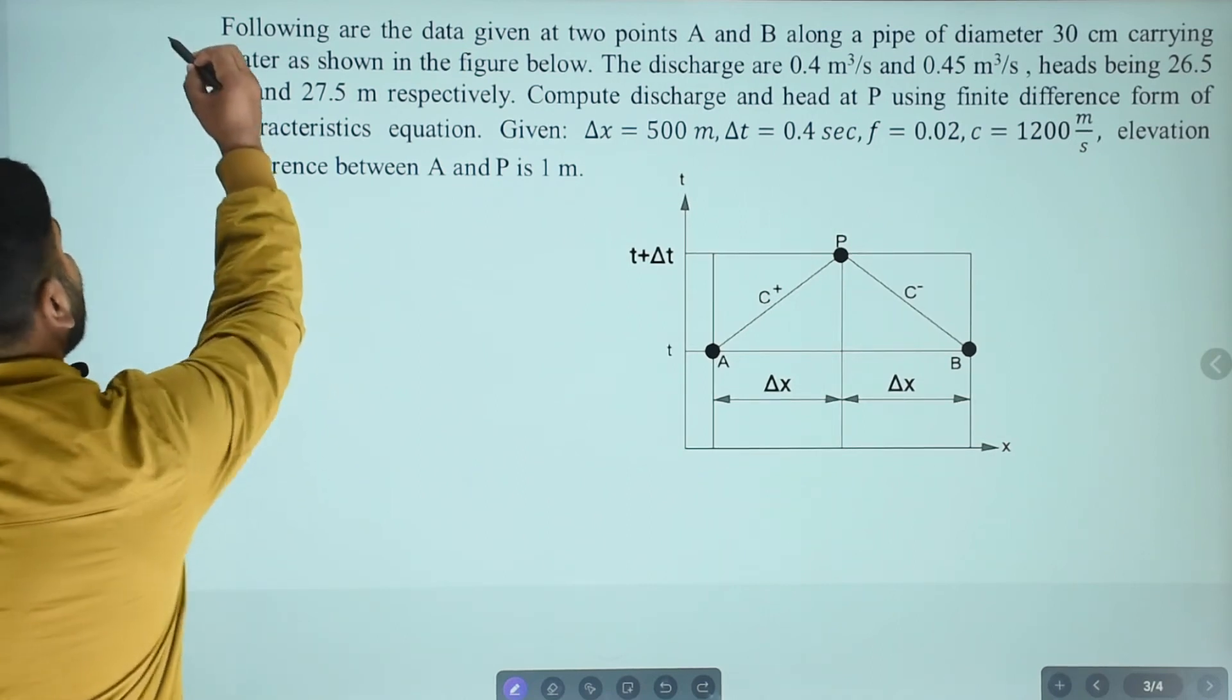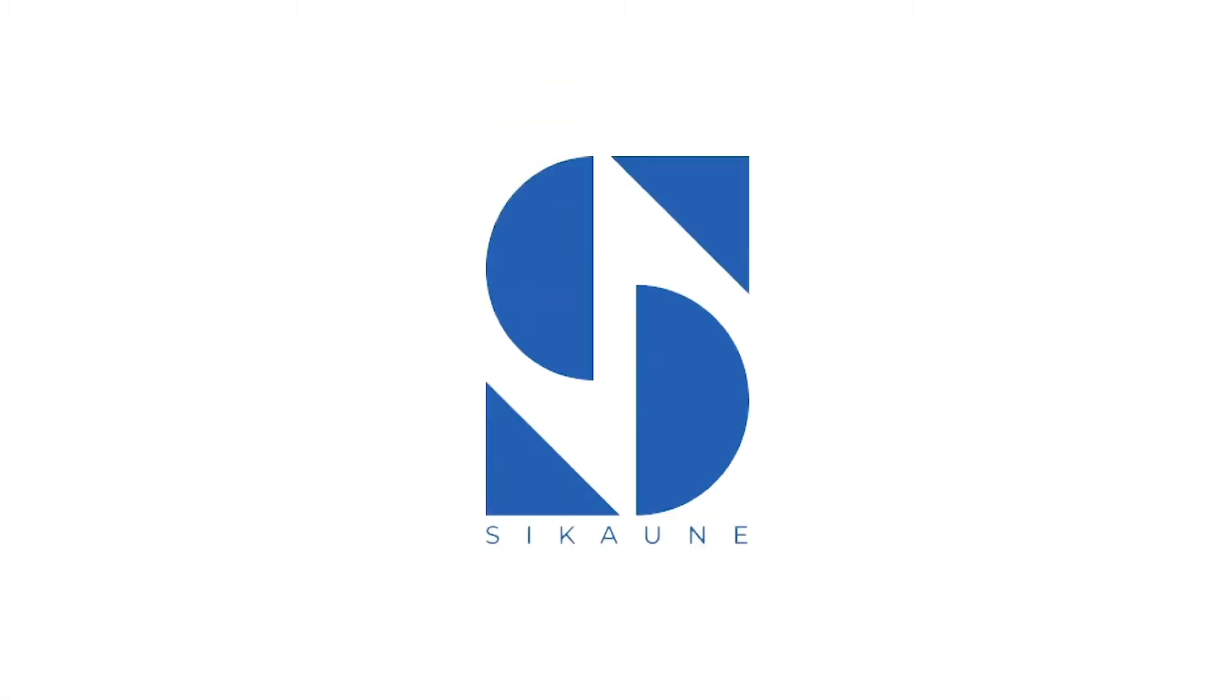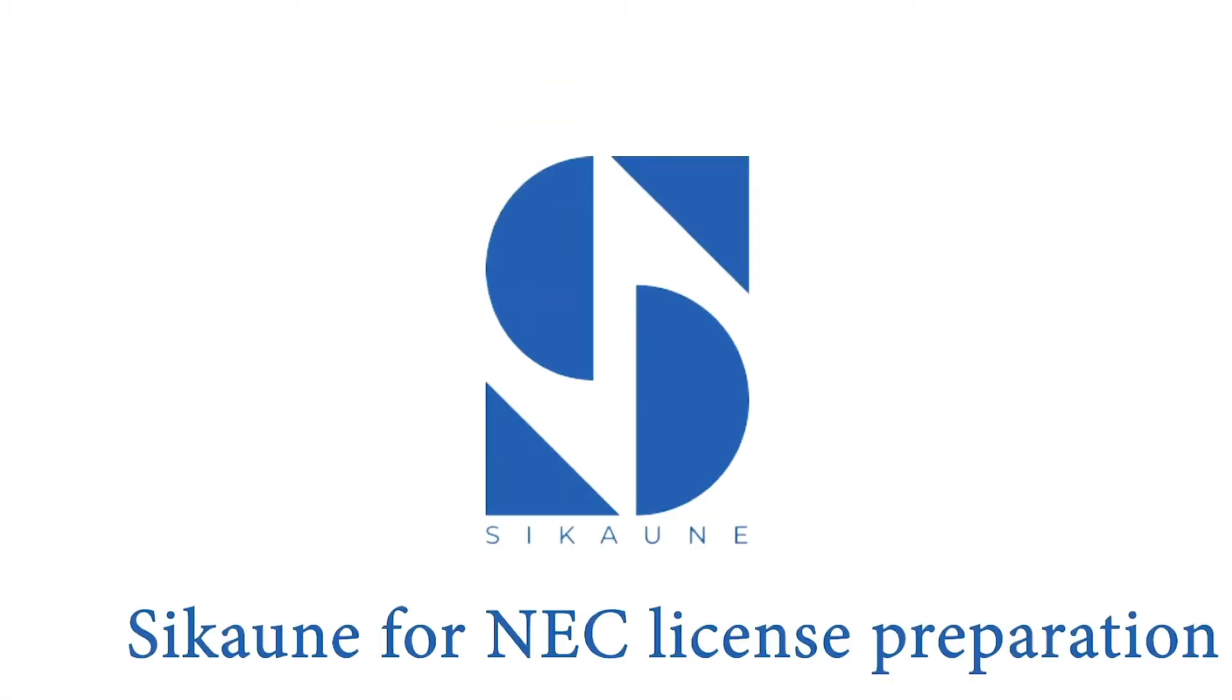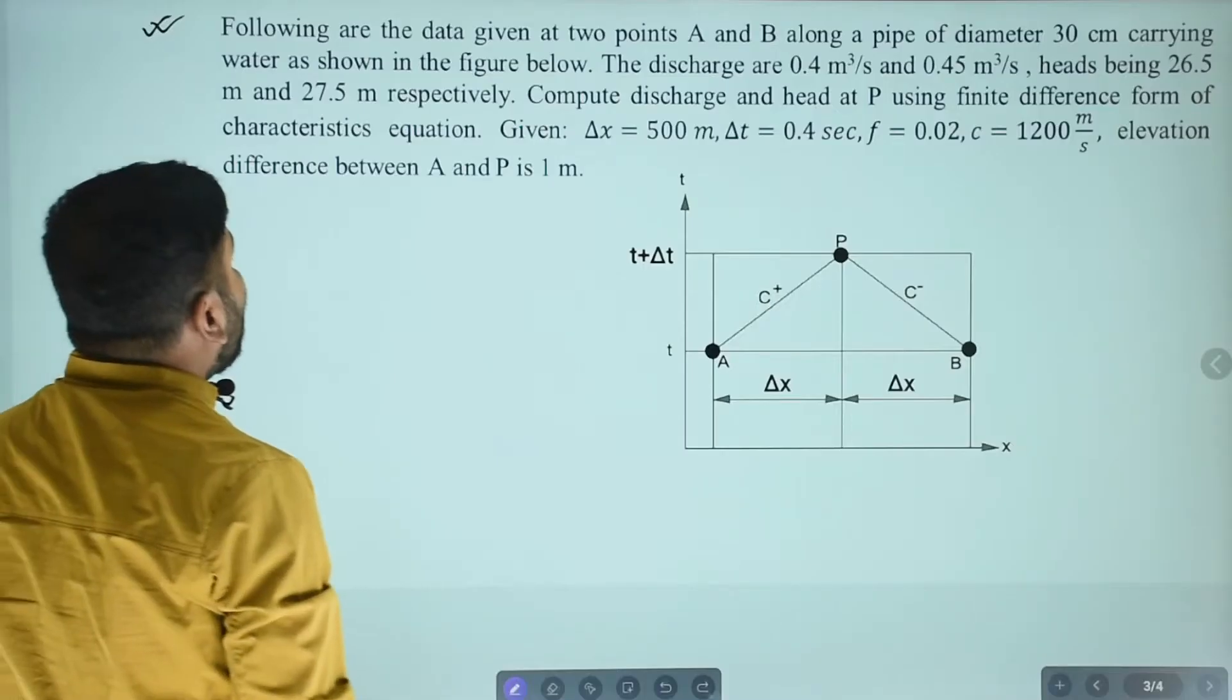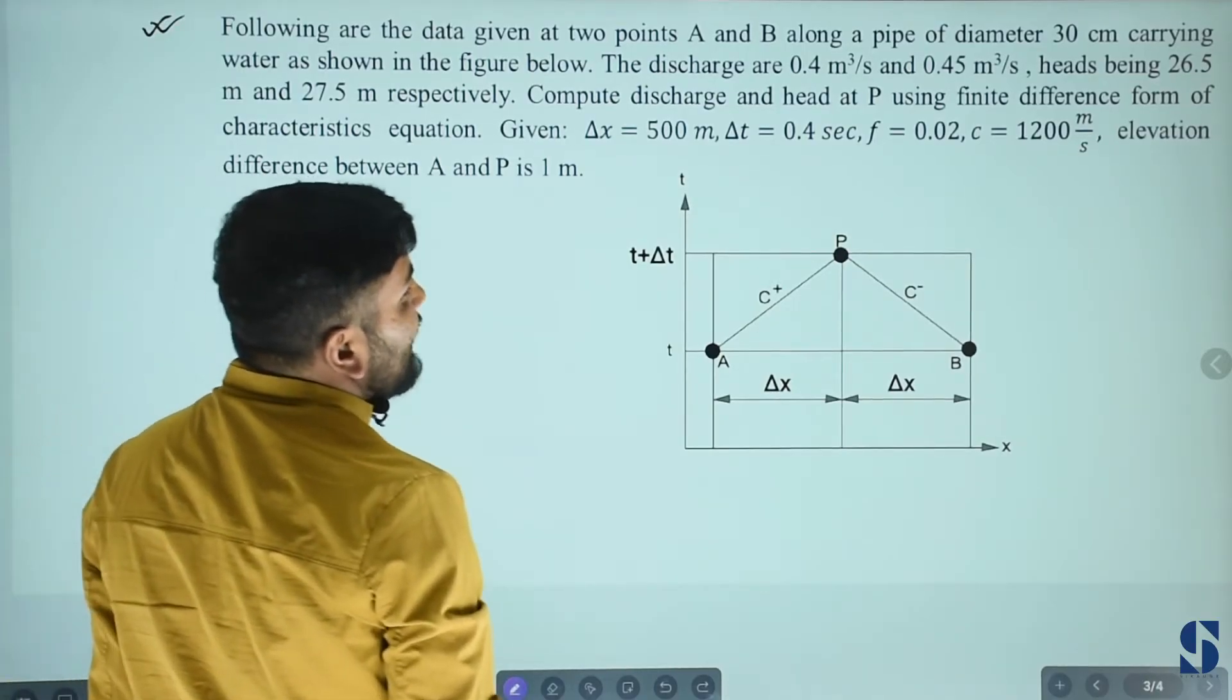Here we have the next question of this method of characteristics. Following are the data given at two points A and B along the pipe of diameter.